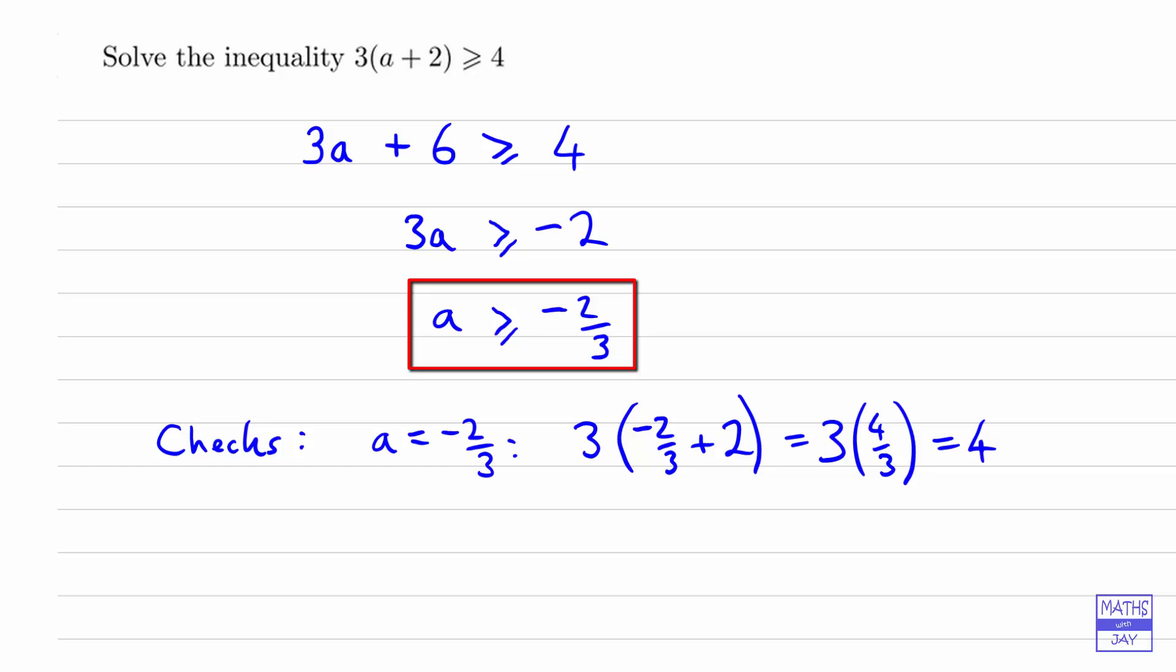And then we're saying that a is greater than -2/3, so a very simple value to try would be 0 to make sure we've got the inequality the right way around. When a is 0, we get 3 times (0 + 2), which is just 3 times 2, so that's 6, and that is greater than 4, so that shows that we have got the correct answer.